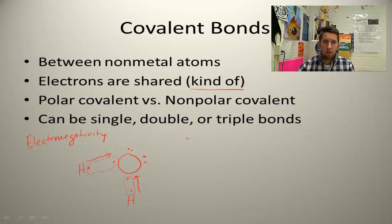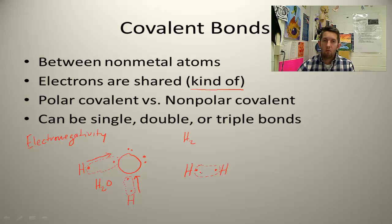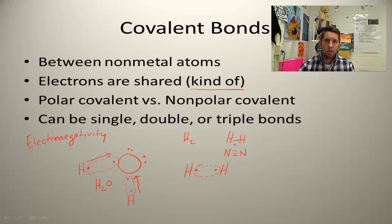A nonpolar covalent bond is a situation like H2. Hydrogen has one valence electron; two hydrogen atoms share their electrons equally since hydrogen has the same electronegativity as hydrogen. The tug of war is a draw — this is a nonpolar covalent bond. Covalent bonds can also be double or triple bonds, sharing four or six electrons, but the key idea is that electrons are not changing hands like in an ionic bond.